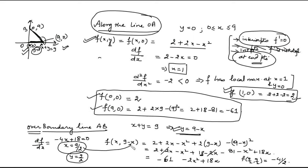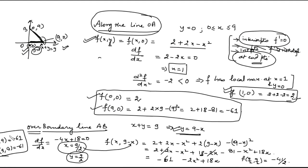The endpoints of line AB are (9,0) and (0,9). At x=0, y=9, the value of the function is −61. At x=9, y=0, the value is also −61. So along boundary AB, the interior critical point gives −41/2 and both endpoints give −61.